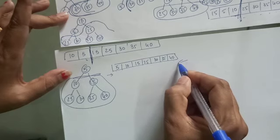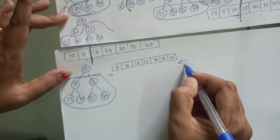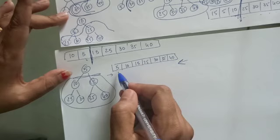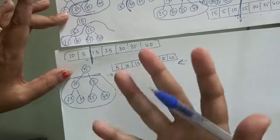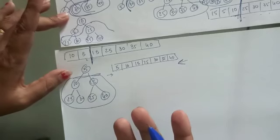And as you can see, if I access this array from the left side it is in ascending order. If I try to access it from the right side, this is nothing but descending order. So this is how this is also called heap sort.